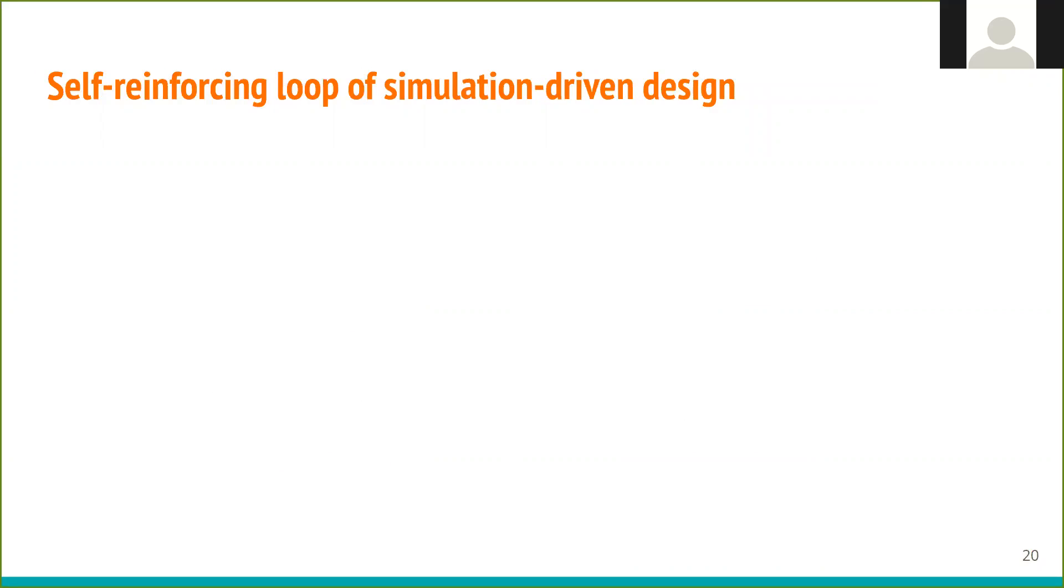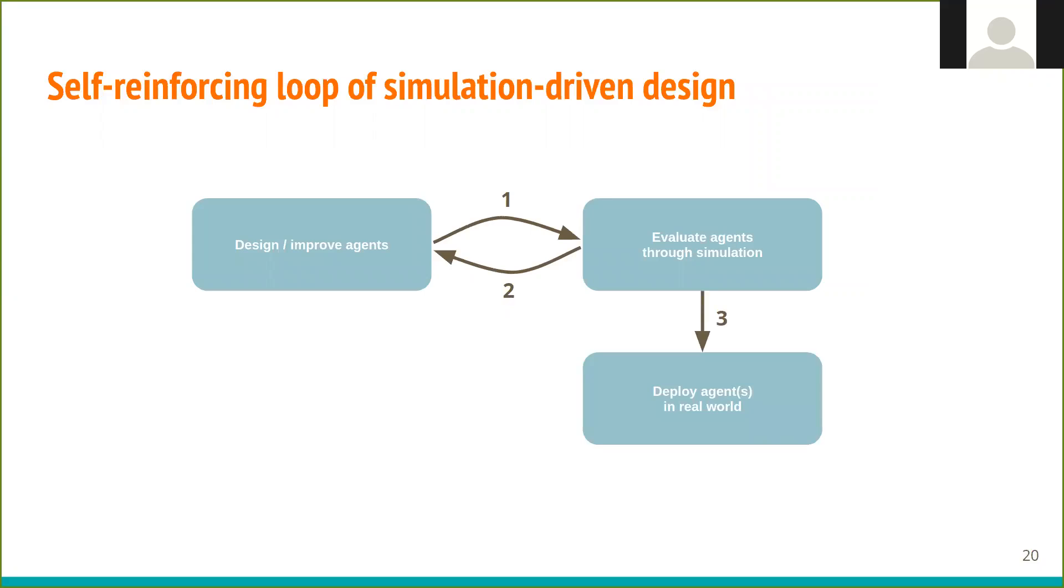The presented simulation framework creates a sort of self-reinforcing loop of design. We start with designing agents that we then evaluate in our simulation environment. Based on the simulation results, we can improve the agents and evaluate them again, and repeat this process until we're happy with the result. Then, we deploy the agent in the real world, and based on the collected results, we can improve the simulation environment and revise underlying assumptions. This will allow us to create even better agents in a new revised environment that matches the real world closer.